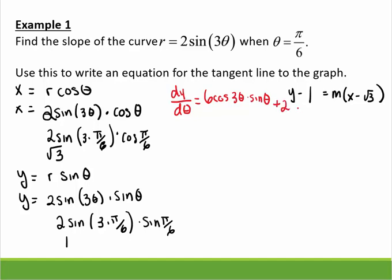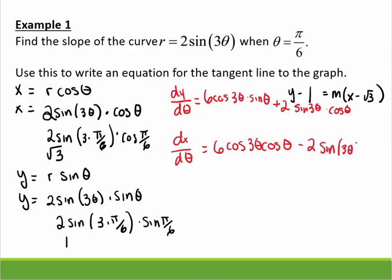plus 2 sin(3θ) times cosine(θ). And I find also dx/dθ, and again, you have a product rule with a chain rule. So 6 cos(3θ) cos(θ) minus 2 sin(3θ) sin(θ).